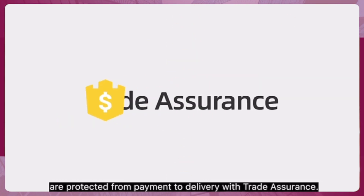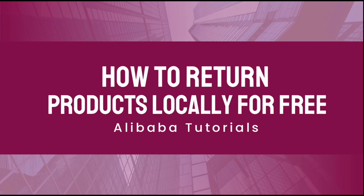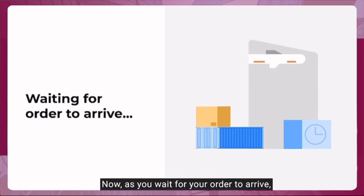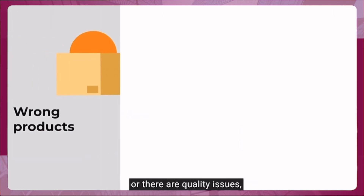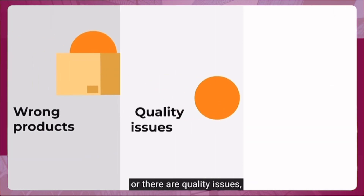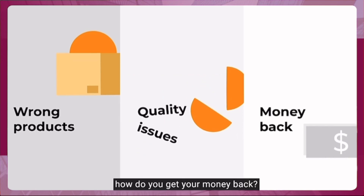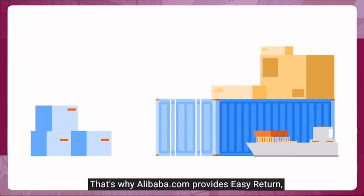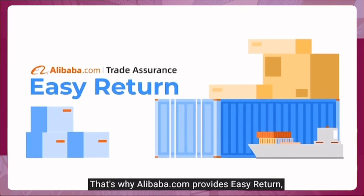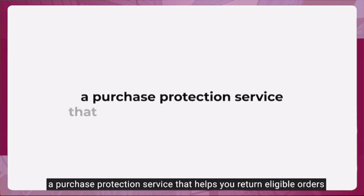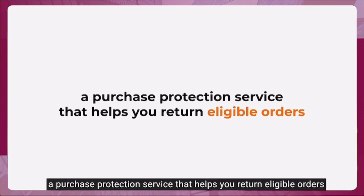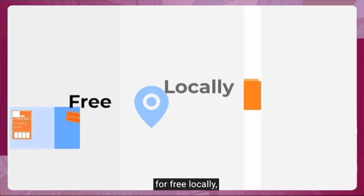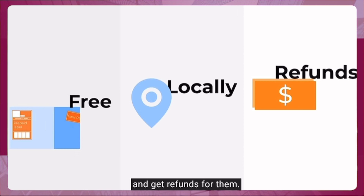While waiting for your order to arrive, you might wonder: if suppliers send the wrong products or there are quality issues, how do you get your money back? Alibaba.com provides Easy Return, a purchase protection service that helps you return eligible orders for free locally and get refunds for them.